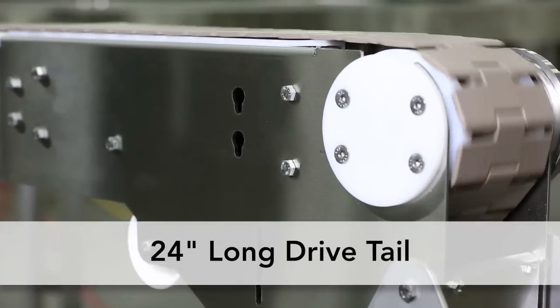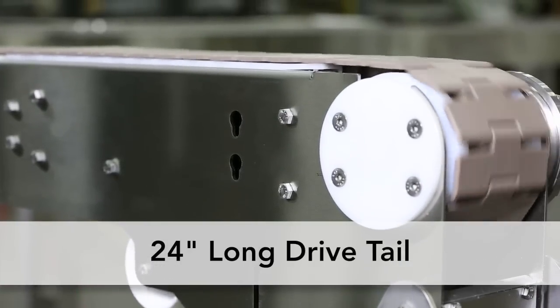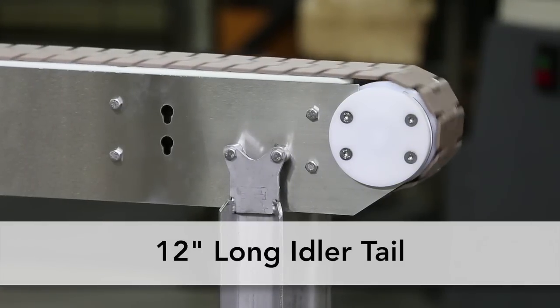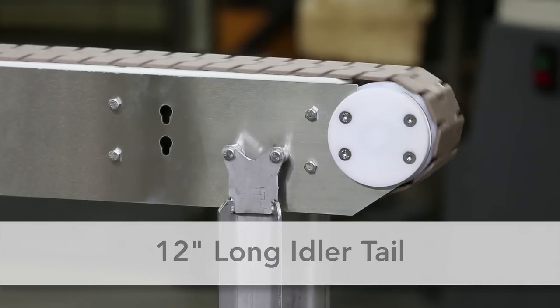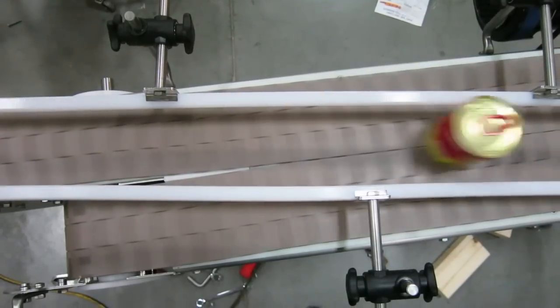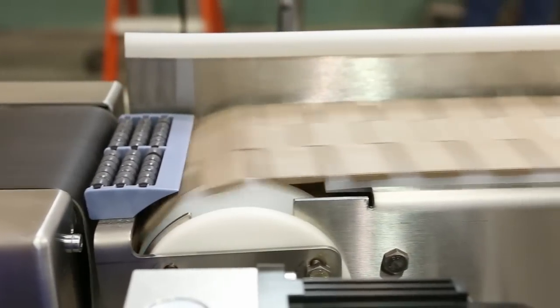The compact drive tail is just 24 inches long and is available in either a side or bottom mount. The 12-inch idler tail features internally located bearings for a flush design that's perfect for side transfers and machine interface.